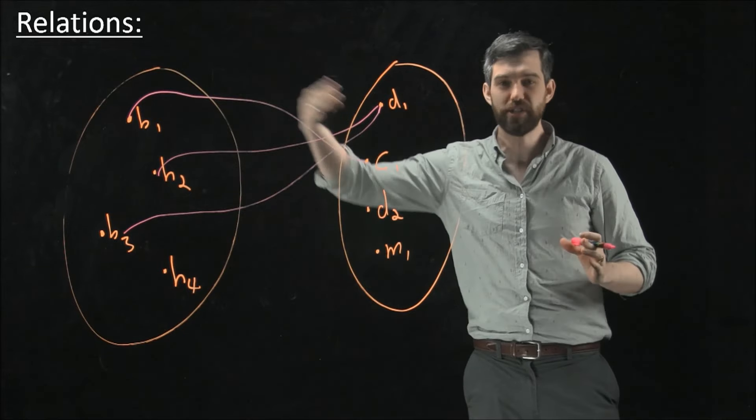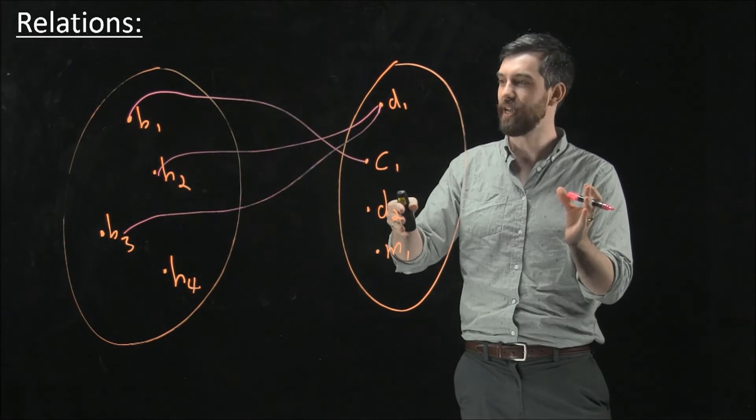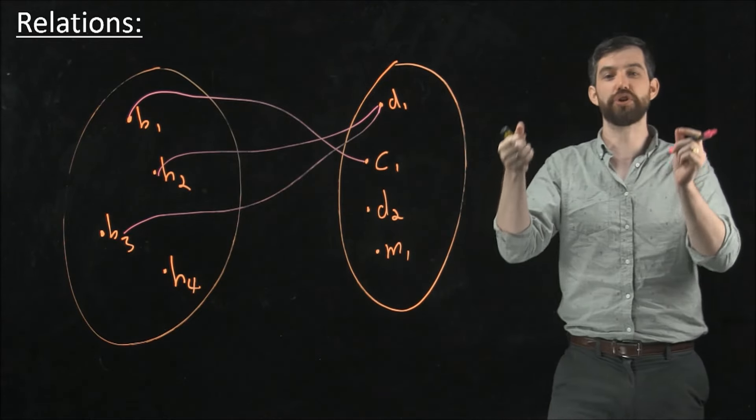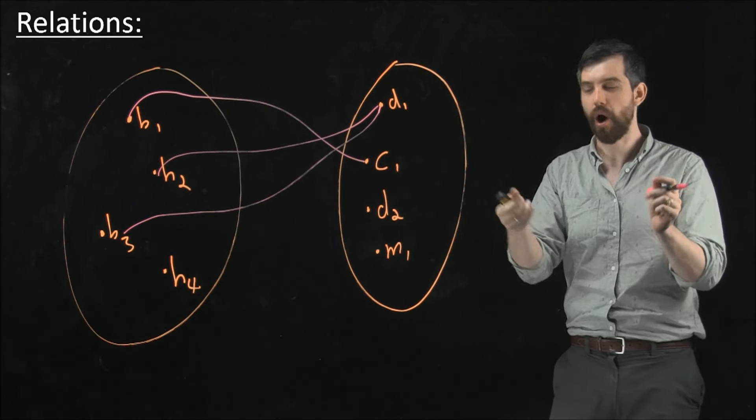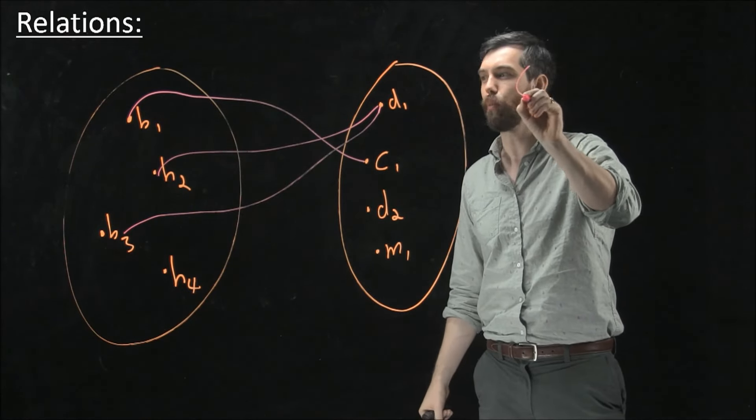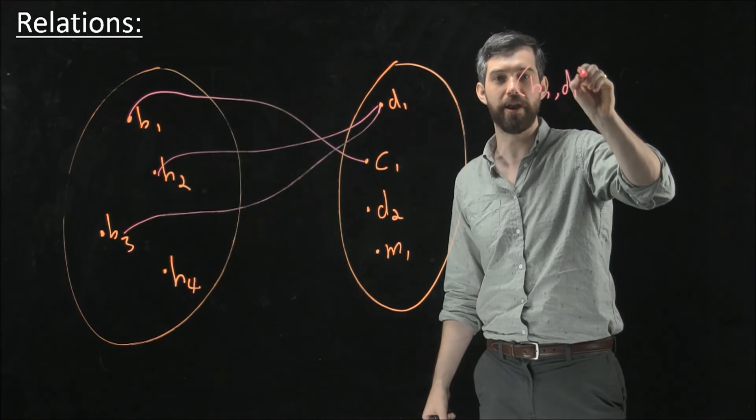This tells you a visual depiction of my two different sets. And it tells you which of these pairs, which ordered pairs, are going to have relationships.